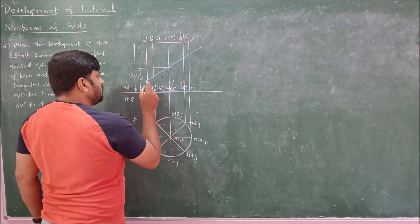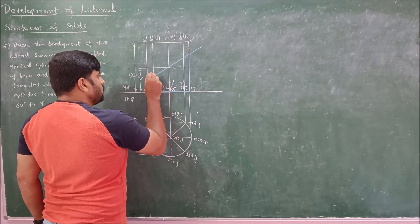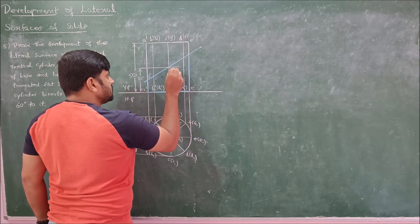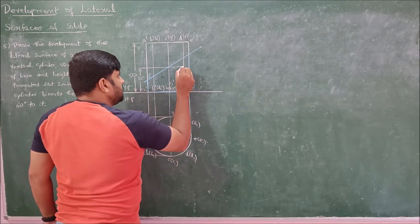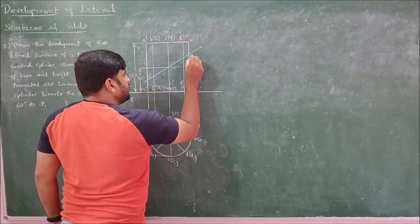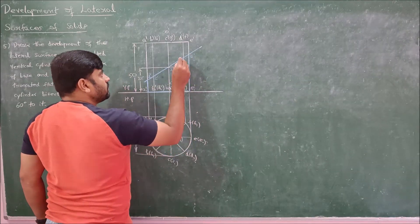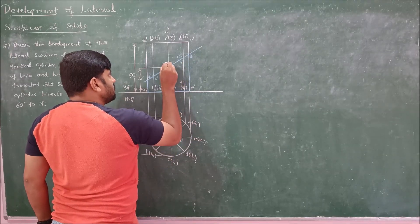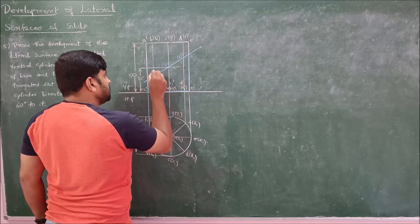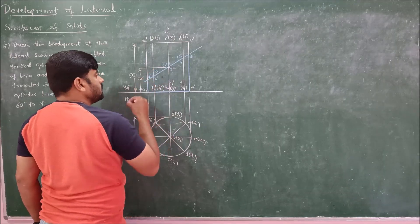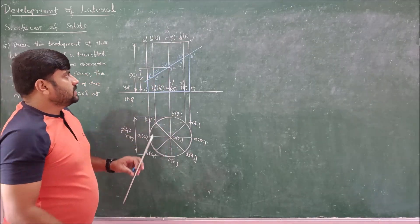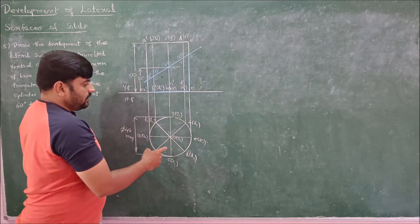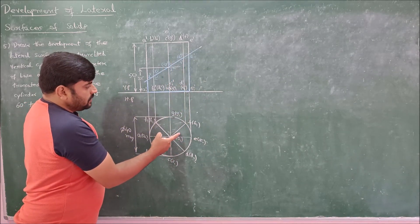First, mark the points where the cutting plane intersects the generator lines. On A we have point 1, on B it is point 2, on C it is point 3, on D it is point 4, on E it is point 5, on F it is point 6, on G it is point 7, and on H it is point 8. For more accuracy, you can use 12 points by dividing into 30 degrees each.